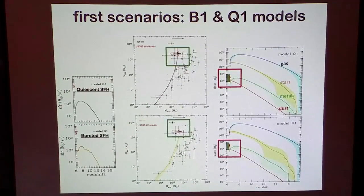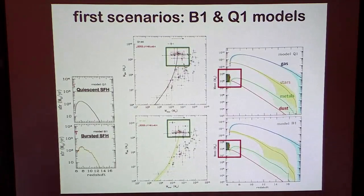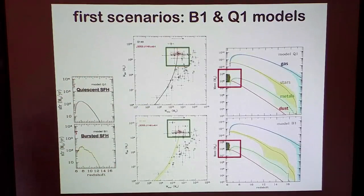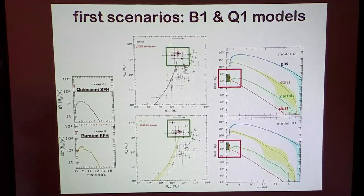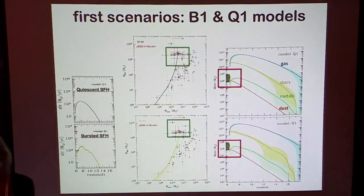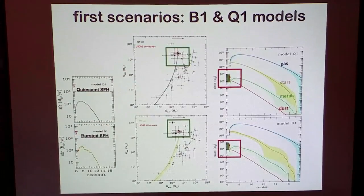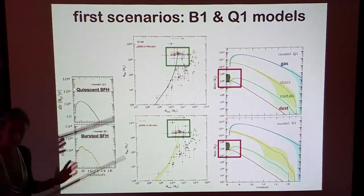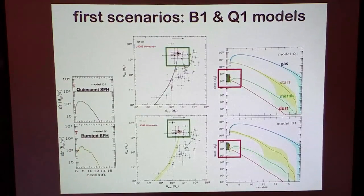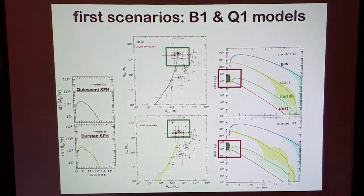Here, feedback is affecting star formation. This is clearly something which needs to be checked against numerical simulations — this kind of steepening in the evolution is seen in some numerical simulations. In the semi-analytic model, essentially when we follow the accretion onto the black hole, we have the freedom to adjust the black hole accretion efficiency — the famous alpha parameter entering the Bondi accretion rate — and we tune this parameter to reproduce the black hole mass. So we are saying that feedback affects star formation before it quenches the black hole, not too different from what is found in numerical simulations.